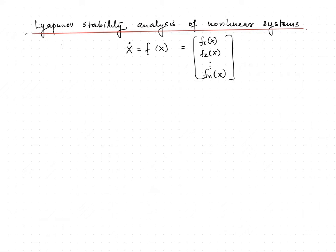Here we define V(x) as f transpose of x into f(x), through which we can ensure that V(x) is a positive definite function. In this case, V dot of x would be f dot transpose of x into f(x) plus f transpose of x into f dot of x.